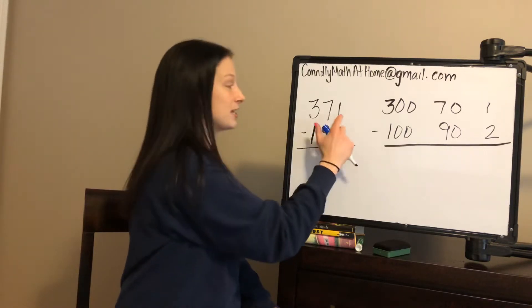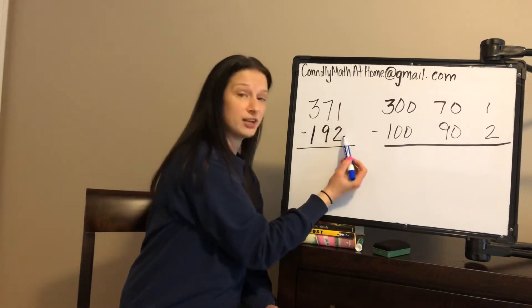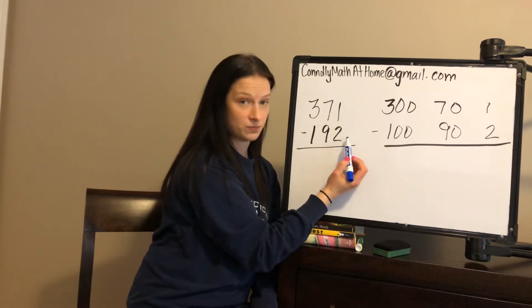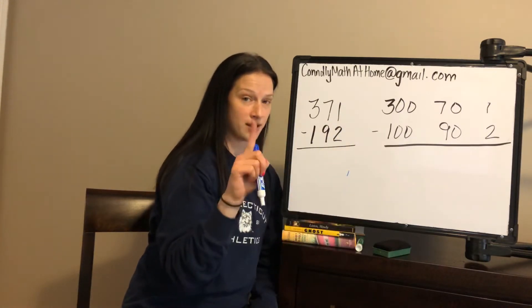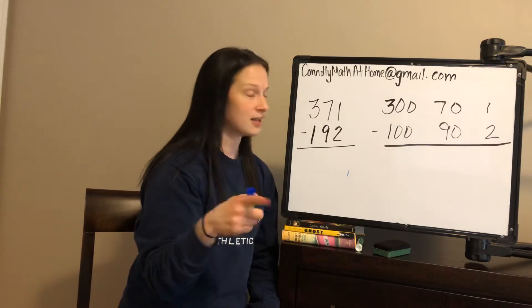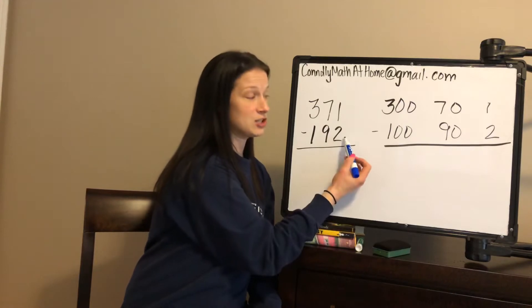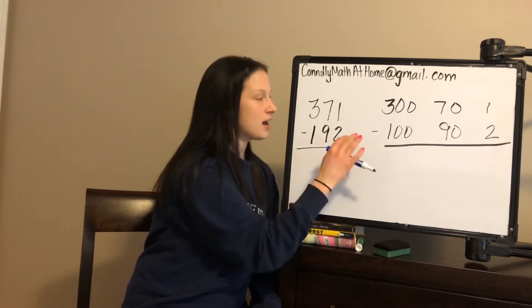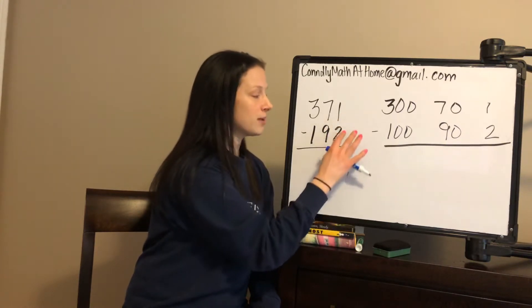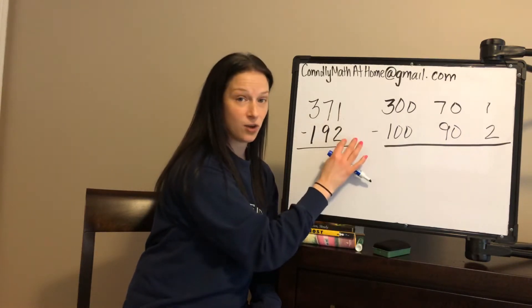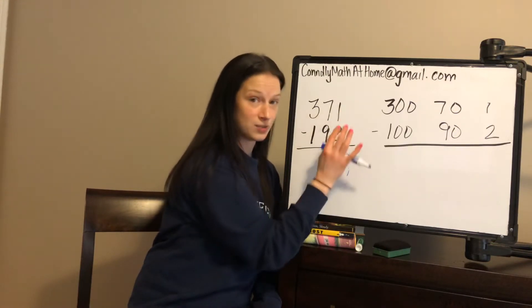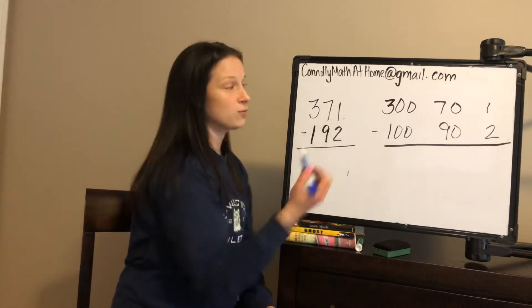So back to the actual step. When we get to the standard algorithm, we start in the 1s place, and you ask yourself: can I subtract 1 minus 2? If I have 1, can I take away 2? And the answer is no, you cannot. Sometimes kids just want to go 2 minus 1 because they can, but that changes the value. Order matters in subtraction, so we can't do that. So 1 minus 2 is the direction we have to go. If you find your student making a mistake, look for that — did they go 2 minus 1?